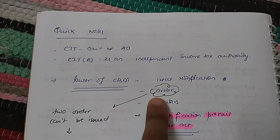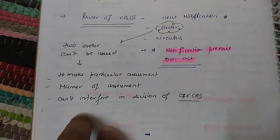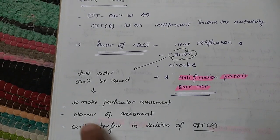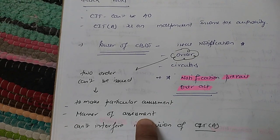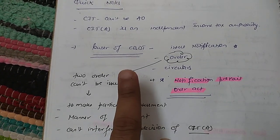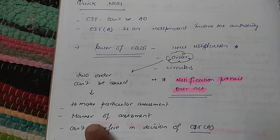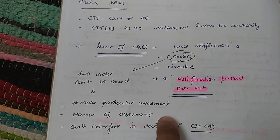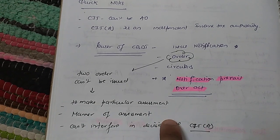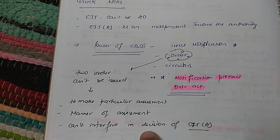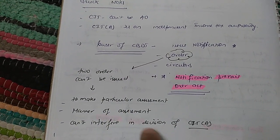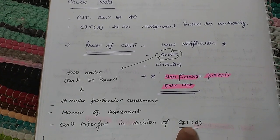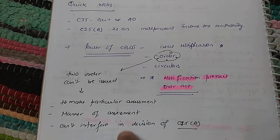CBDT can also issue orders; however, there are two types of orders CBDT cannot issue. First, they cannot issue orders directing a particular assessment to be made. Second, they cannot issue any order defining the manner in which an assessment should be conducted — that is at the discretion of the Assessing Officer. Another limitation of CBDT is that they cannot interfere in the decisions of CIT Appeals. Since CIT Appeals is an independent income tax authority, any decision passed by CIT Appeals is beyond CBDT's power to interfere with.